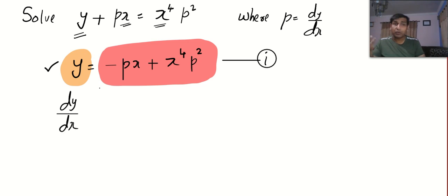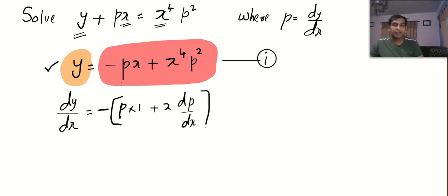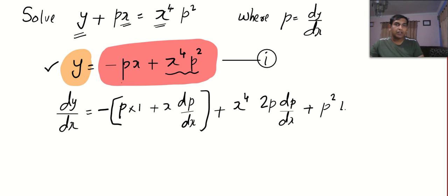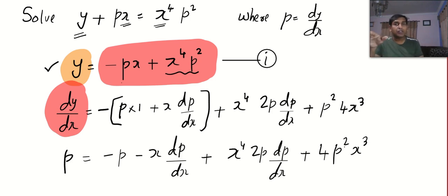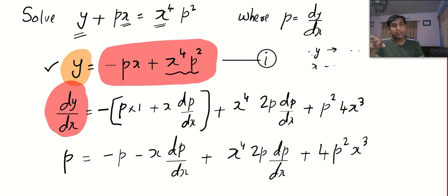If you solve for y you differentiate with respect to x; if you solve for x you differentiate with respect to y. We have to apply the product rule. The first function's derivative with respect to x is 1, plus x times dp/dx. Applying product rule again: the derivative of p² is 2p·dp/dx, plus p² times 4x³. Then replace dy/dx with p and dx/dy with 1/p.